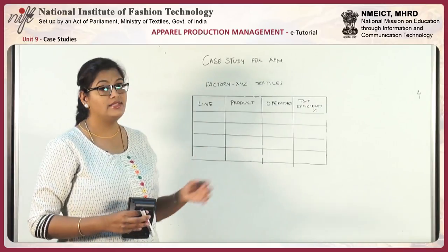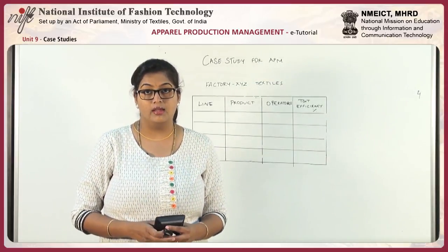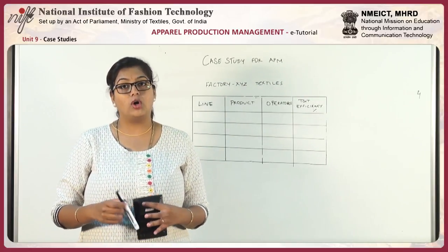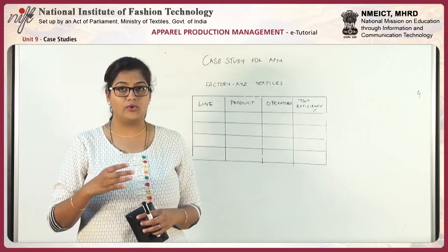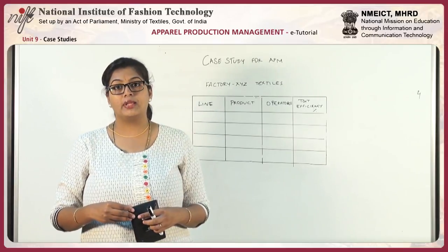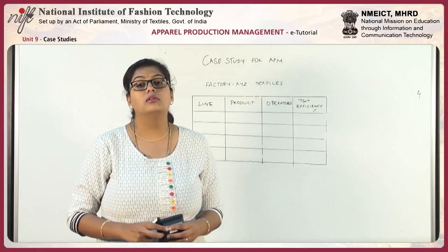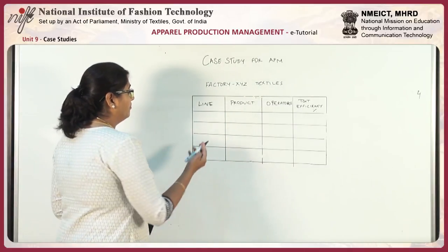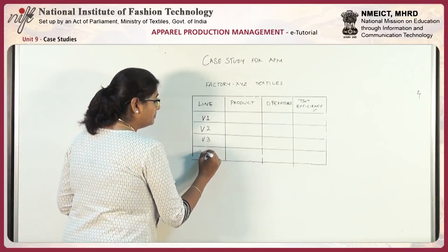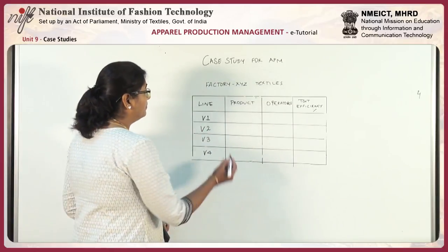Now we are going to look at a case study which will encompass all the topics studied in apparel production management. We will take an example of a real-time garment factory - XYZ Textiles - and understand how capacity planning is done, how a factory is set up in terms of different lines based on operators and labor available.